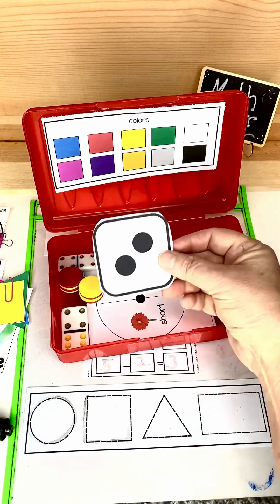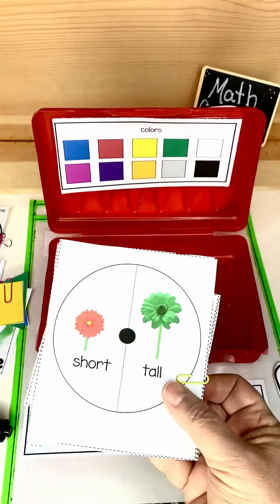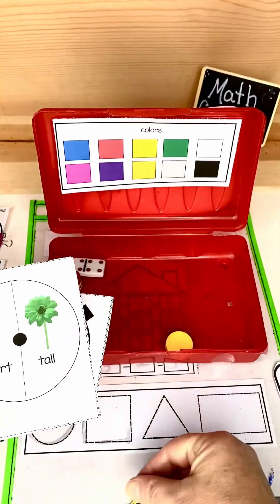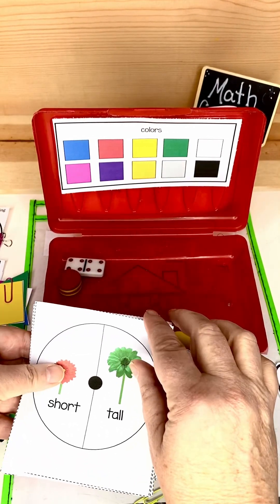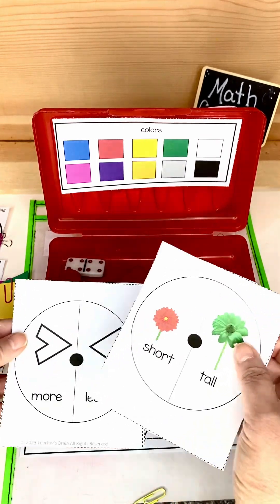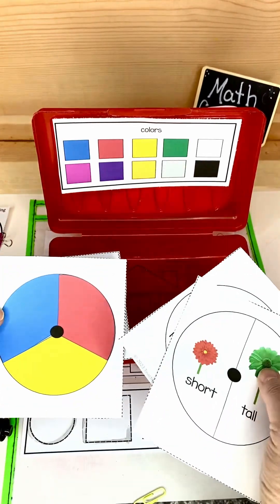And inside you'll find there are different kinds of dice. There are a lot of different spinners. You've got different ones to choose from and they're also editable so that you can add whatever you would like to the spinners to go with whatever you're working on.